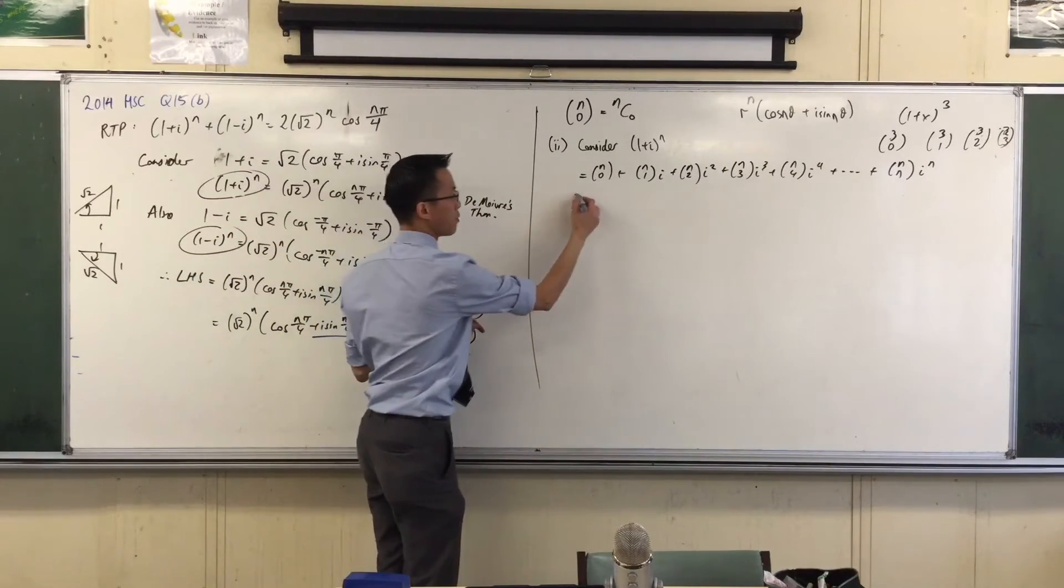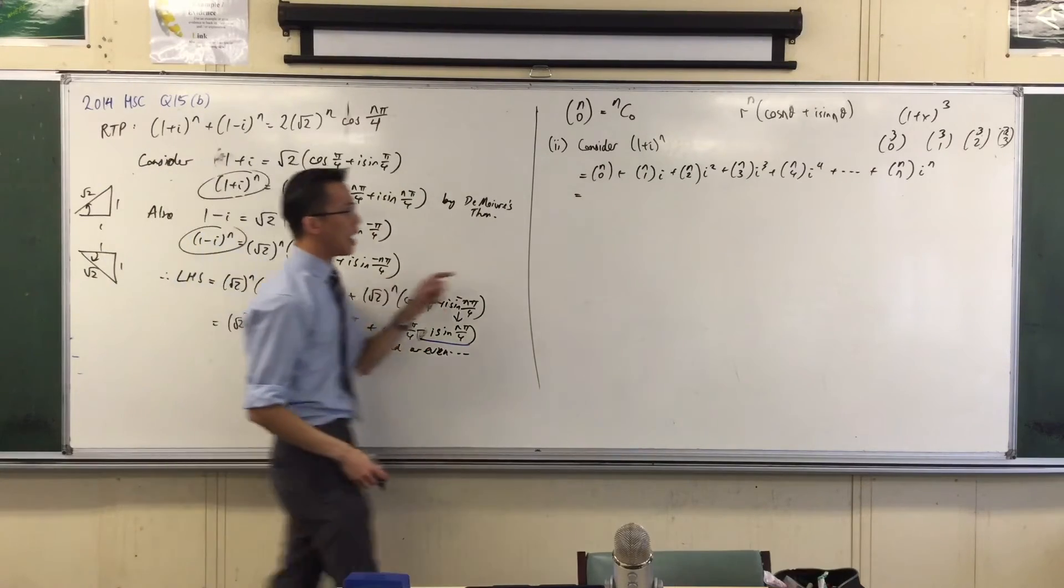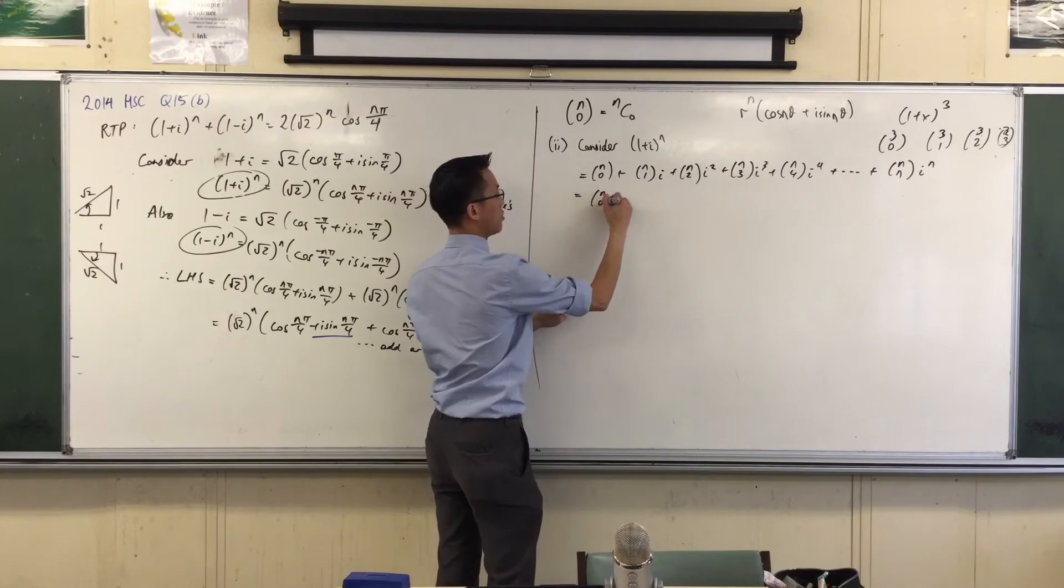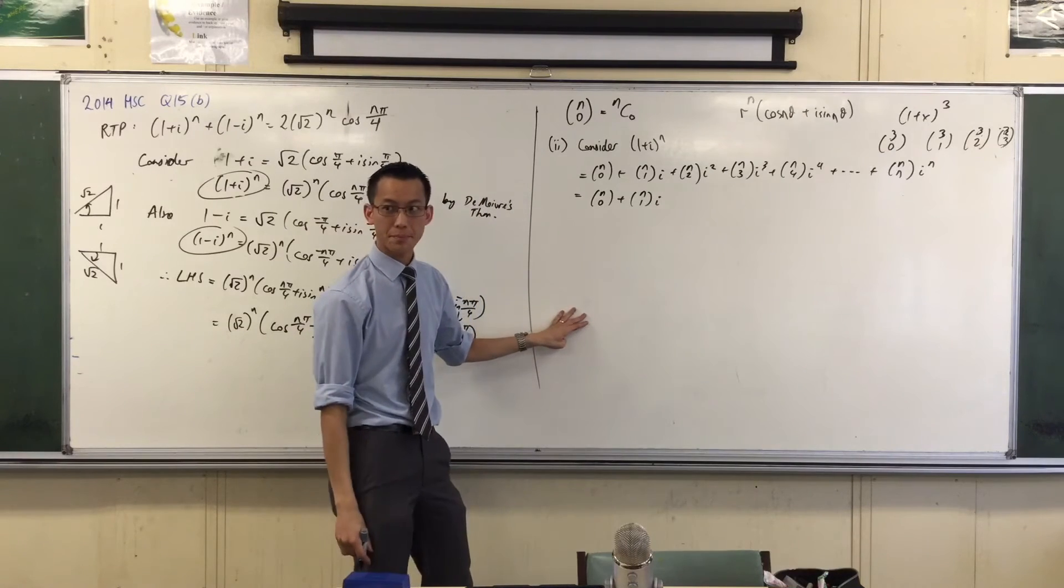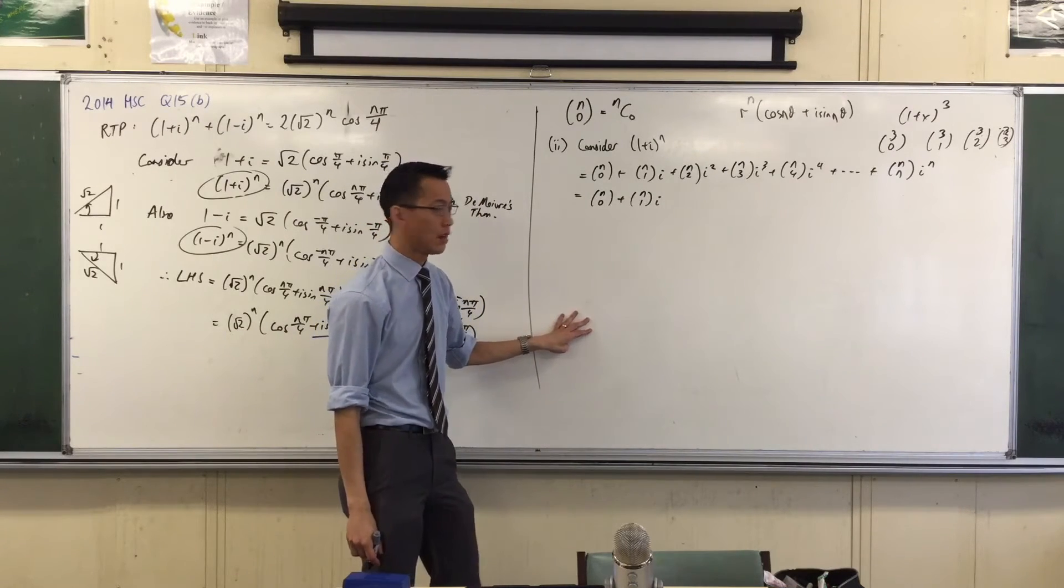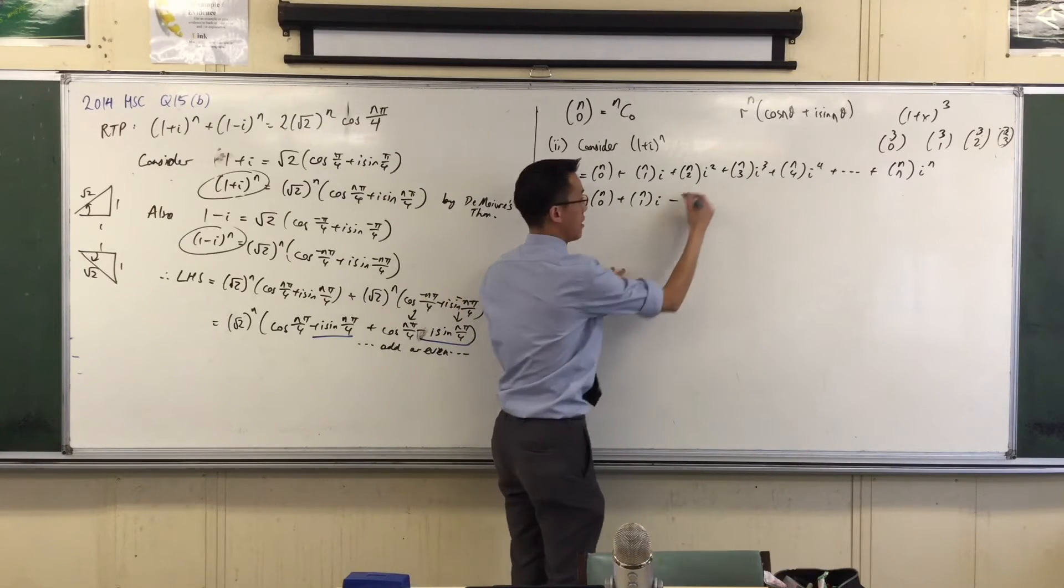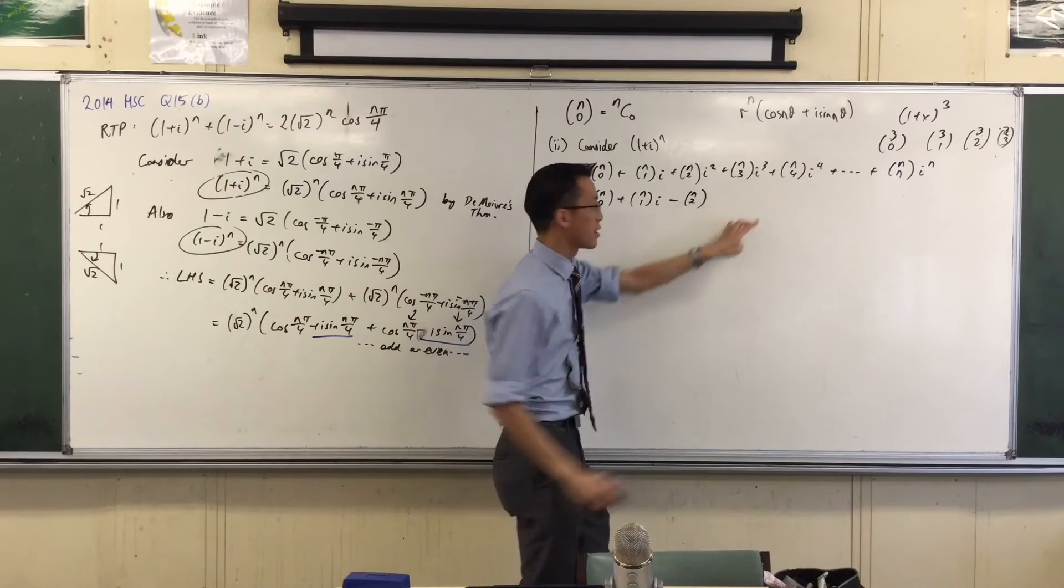Yeah, very good. i^n times n choose n, i to the power of n, or whatever that happens to be. Okay, now I can do a little more work on this before I leave it and think about the other one, its conjugate, okay?